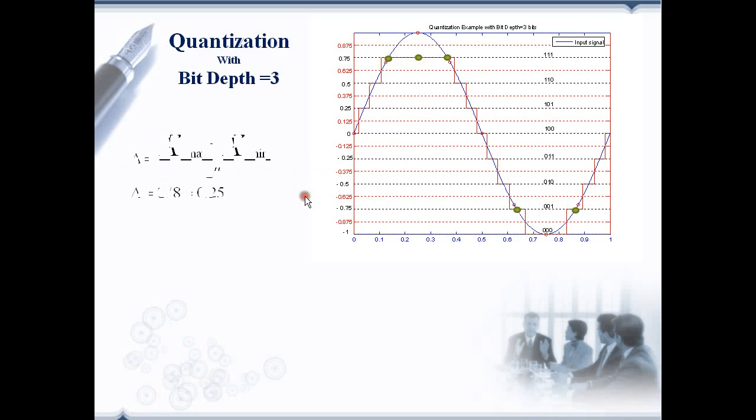We know the step size is given by the equation X_max minus X_min divided by 2 power n. Now n is 3, so the number of quantization levels are 2^3, which equals 8. The step size is obviously reduced from 0.5 that we saw in the 2-bit quantization example to 0.25 here.